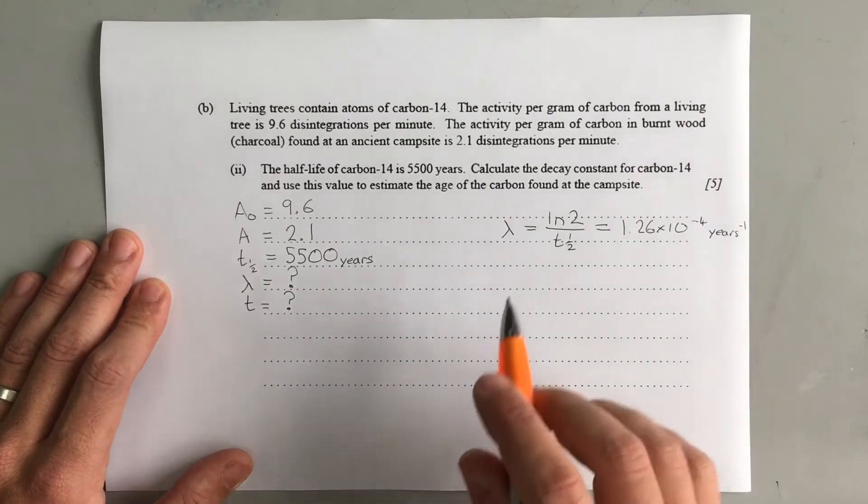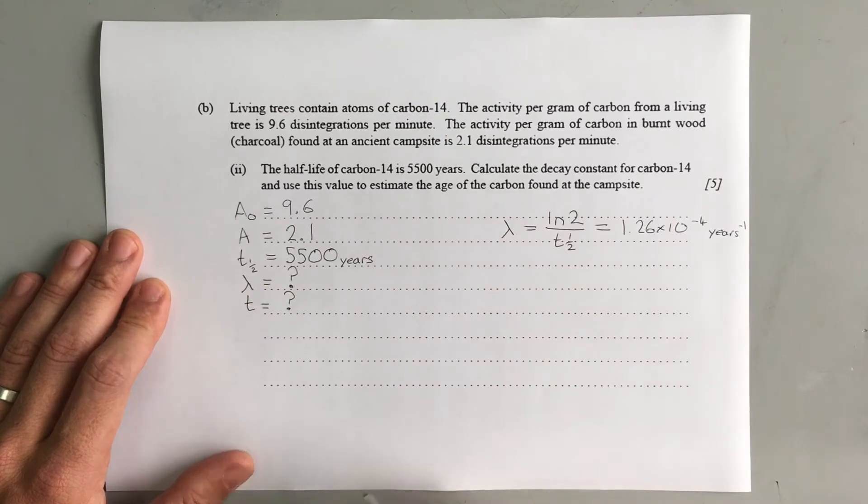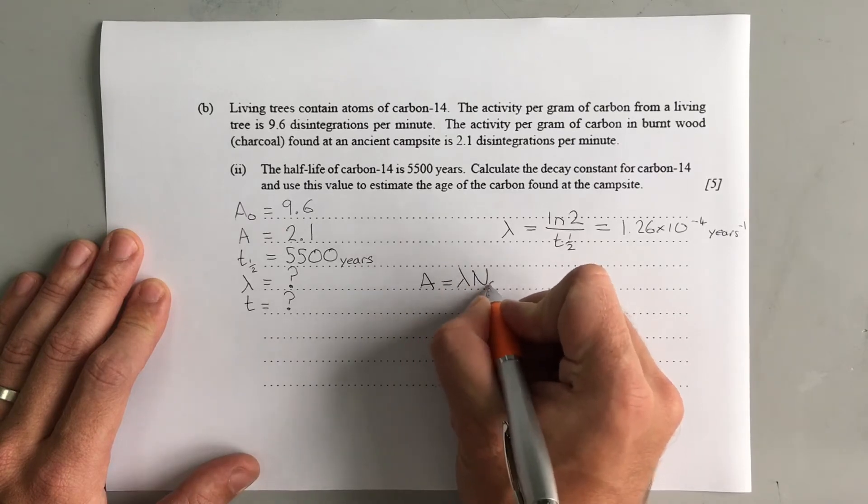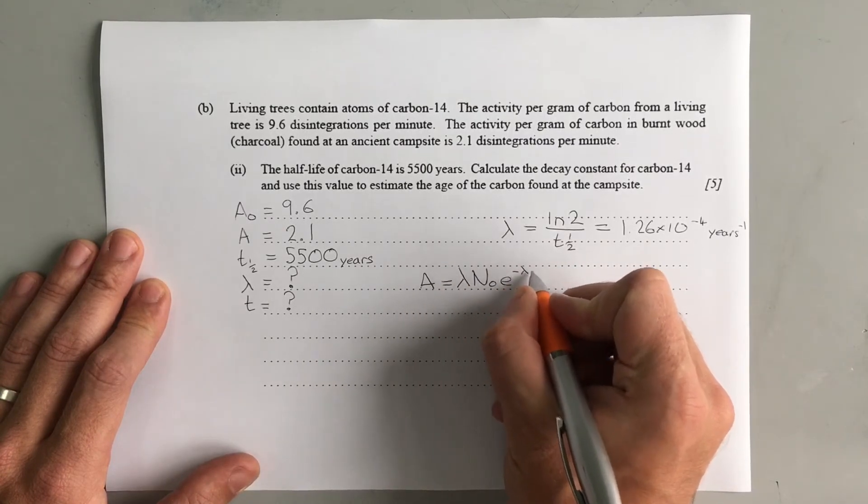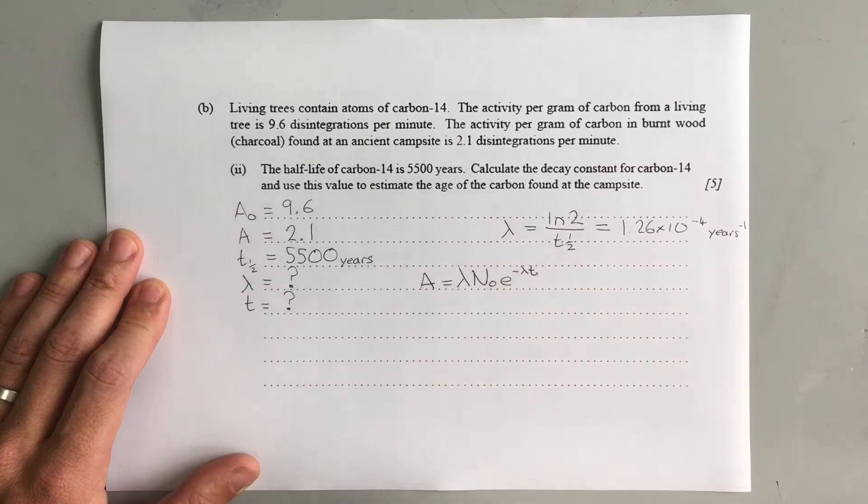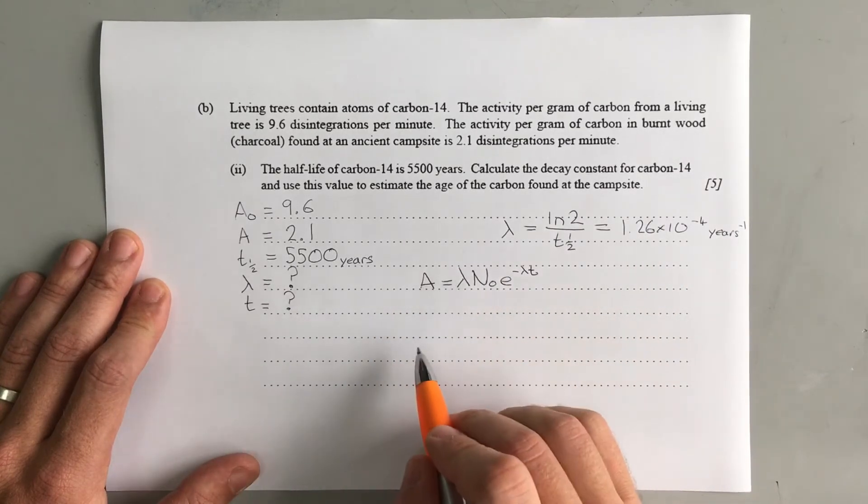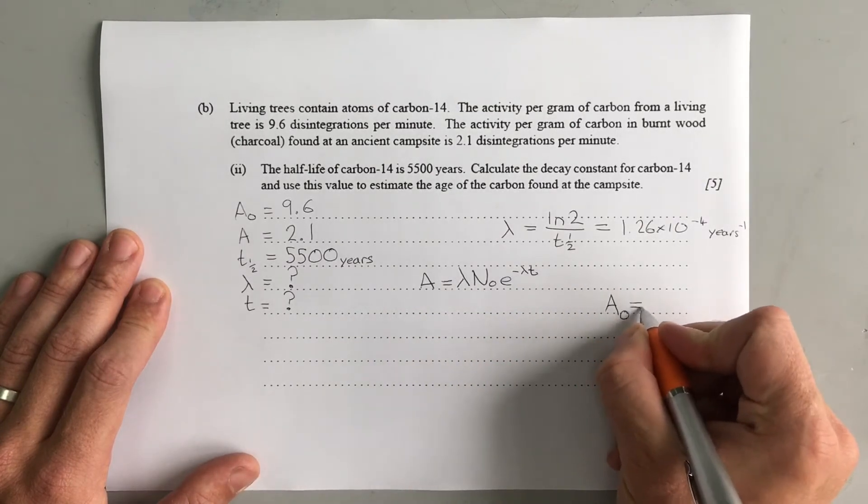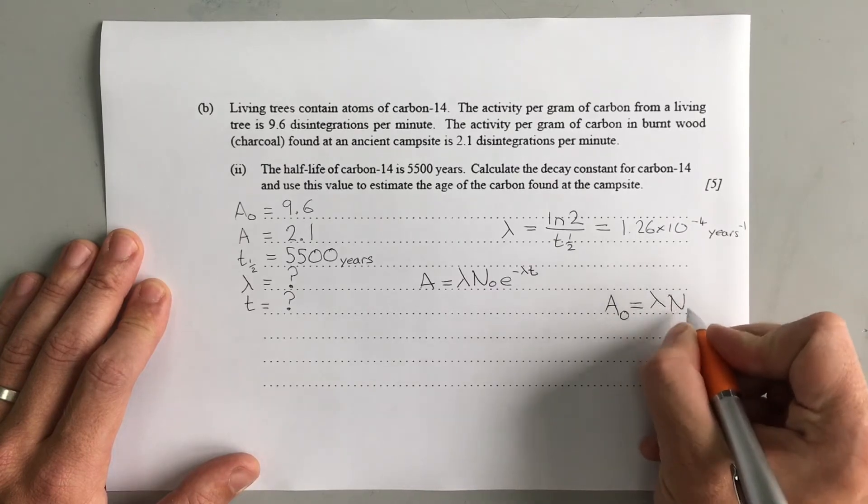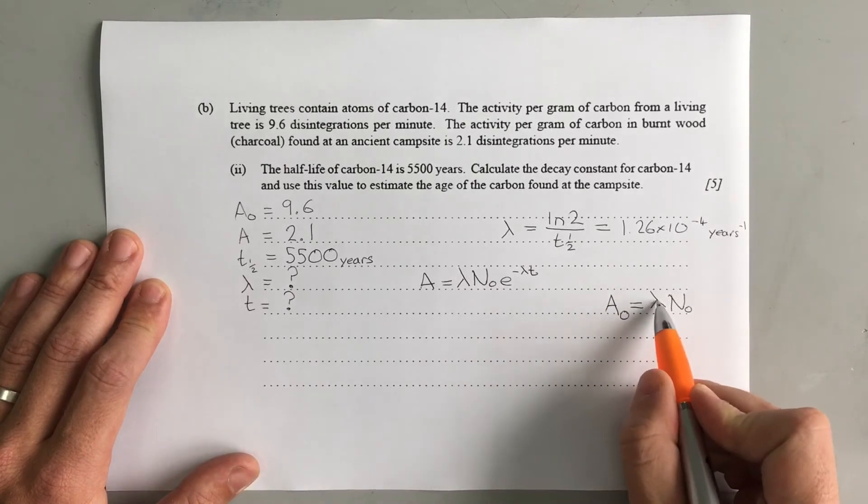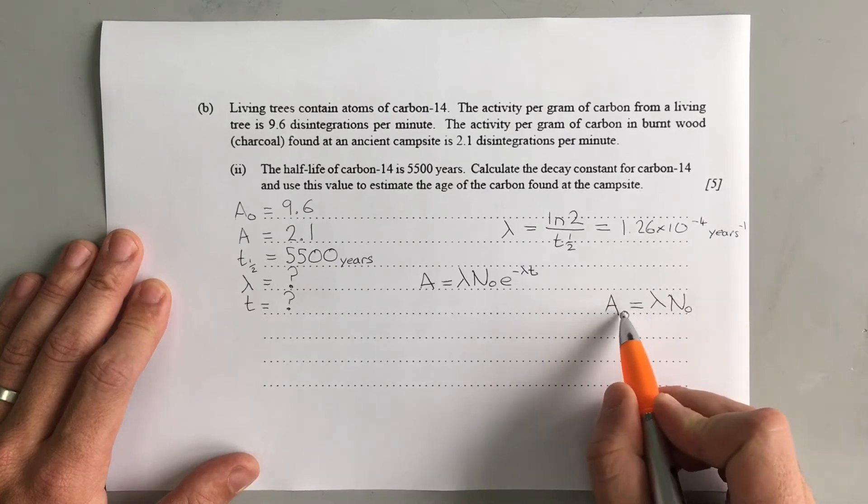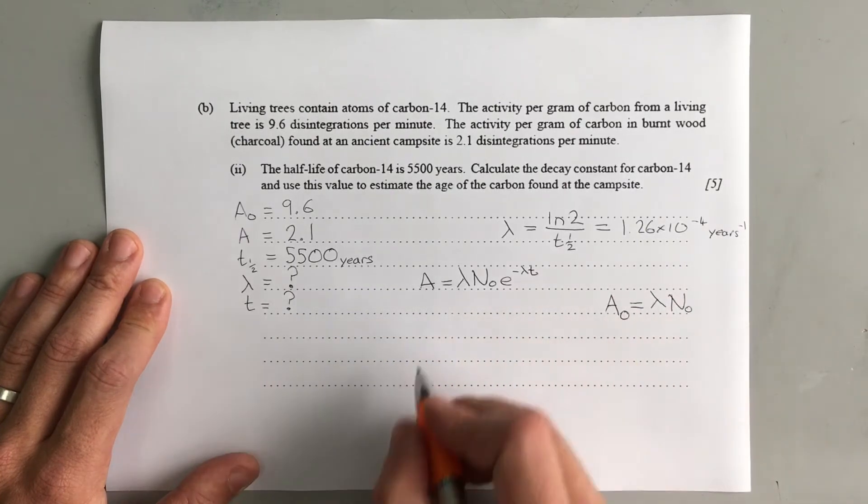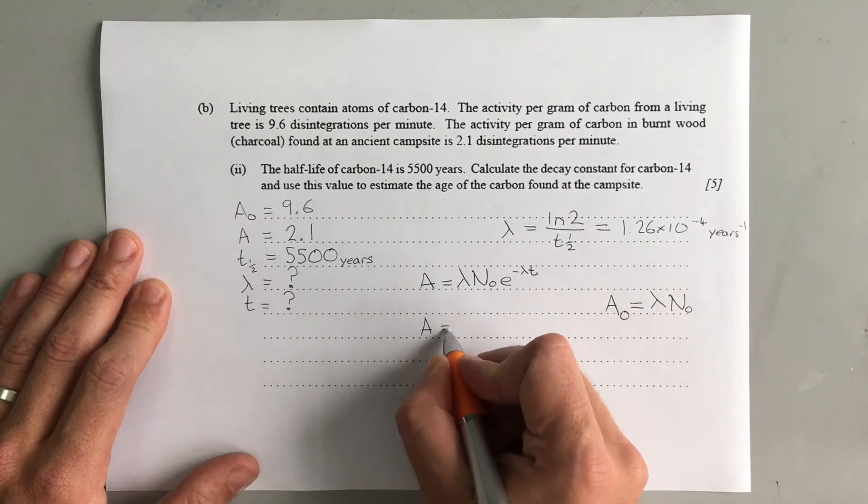Now next, we want to find out the age of the carbon found at the campsite. To do that, I'm going to take an equation from the data booklet, which is A = λN₀e^(-λt), and we want to find t. Now we don't have N₀, but we do have λ. But what we do know is that A is λN, so A₀ must be λN₀, because the decay constant is really just a ratio between the activity and the number of radioactive nuclei. So if we use that and put that in there, then we end up with A = A₀e^(-λt).